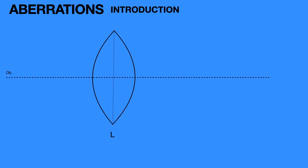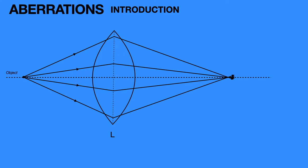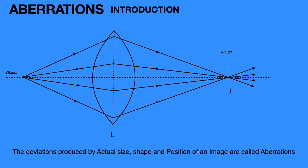First, we will discuss the introduction to the aberration unit. Consider any lens in the field. When light rays coming from the object are incident on the lens, it refracts into the lens and forms an image for the object at point I. So, when deviations are produced in actual size, shape, or position of an image of an object, these are called aberrations. This is our definition for aberrations.